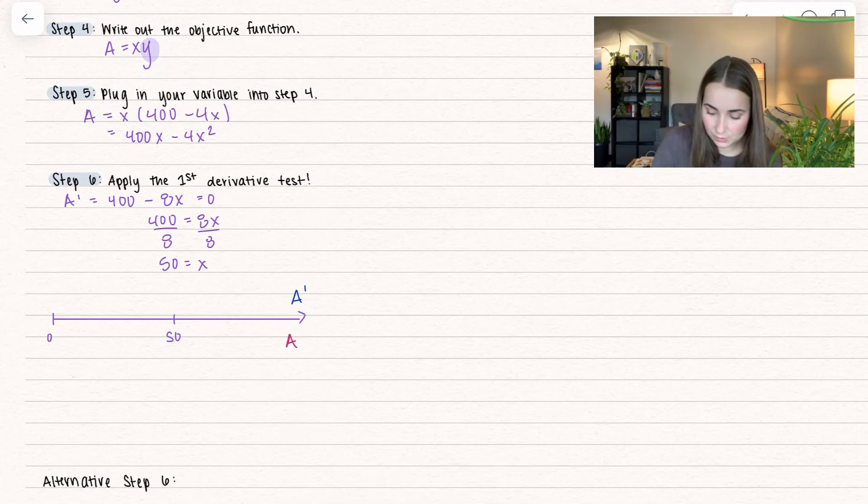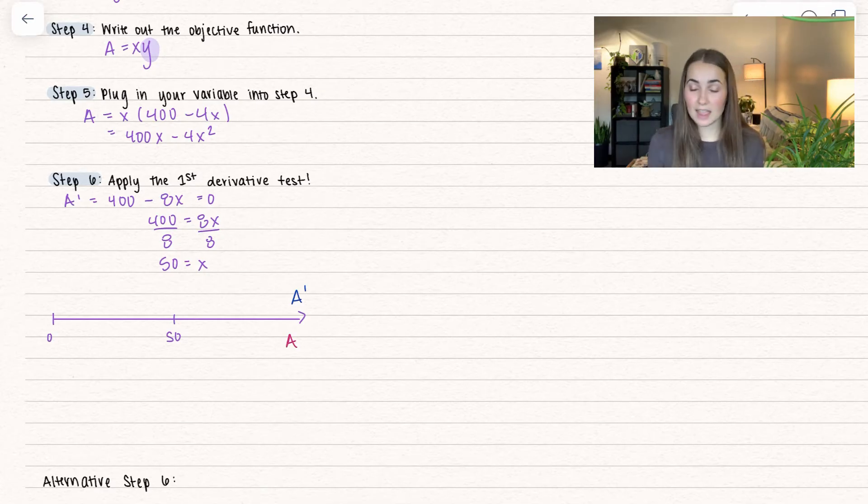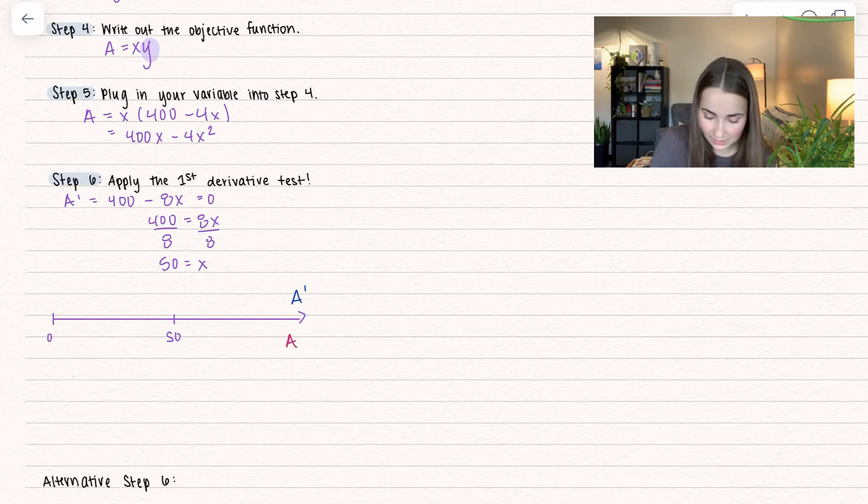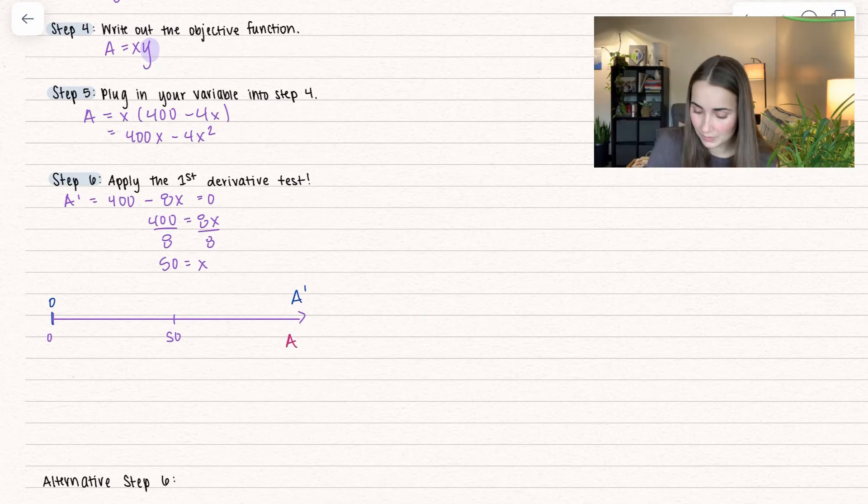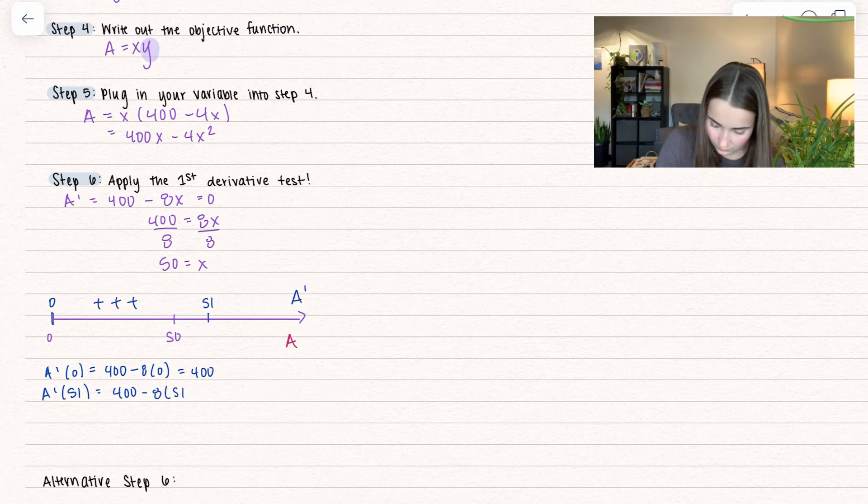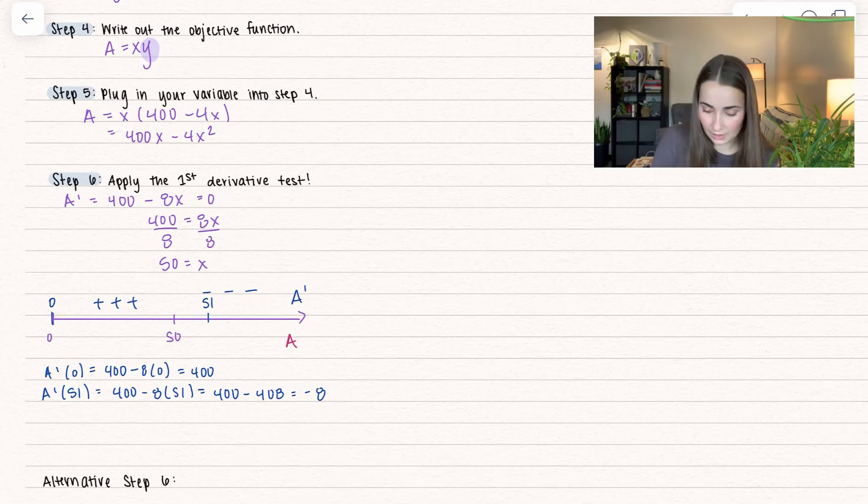With our number line, we'll never go negative - we stop at zero. We can't have negative fencing. Let's draw in our critical point. We'll plug values into our first derivative to tell us if our area function is increasing or decreasing. I'll plug in zero and then 51 as test values. In our first interval, when I plugged in zero, I got a positive value, meaning my function is increasing. When I plugged in 51, I got a negative value, meaning my function is decreasing.